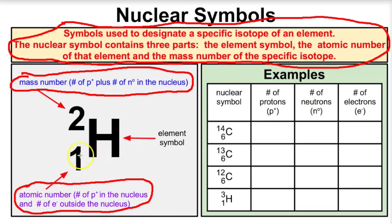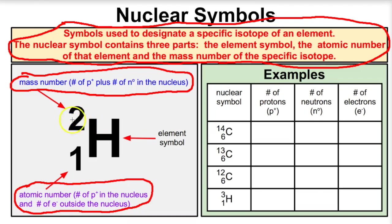If this number is the number of protons, and this number is the mass number — which is the number of protons plus neutrons in the nucleus — then how do we figure out the number of just neutrons? Go ahead and pause this video and think about that for a second. We're going to take the mass number minus the atomic number, and that will give us the number of neutrons.